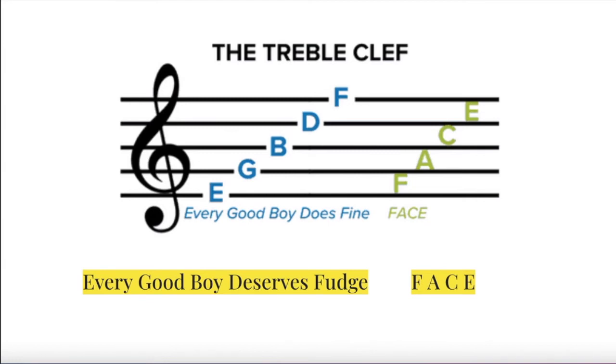The lowest space on the treble clef is an F. The spaces spell out the word face in ascending order. F-A-C-E.